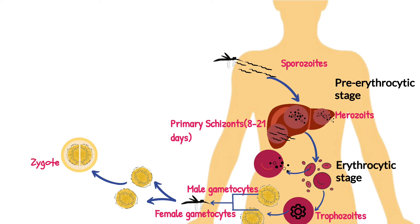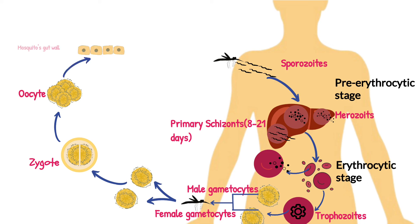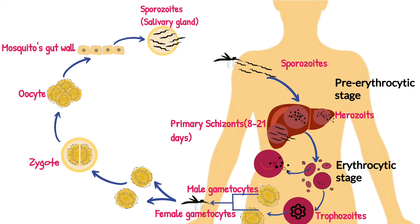Here in the mosquito, the male and female gametocytes fertilize in the gut to form a zygote. The zygote then develops into an oocyst, which crosses the gut wall and reaches the salivary gland. Here, they are developed into sporozoites, which are ready to infect a new healthy individual with the next blood meal, thus repeating the cycle and completing the infection.